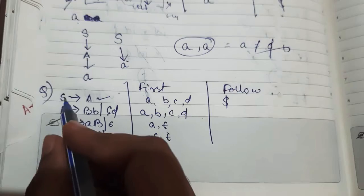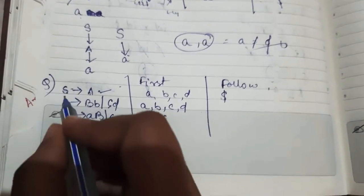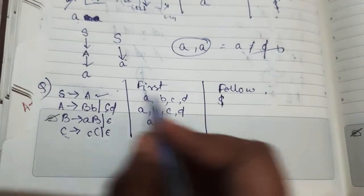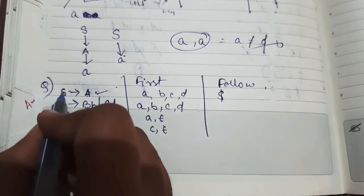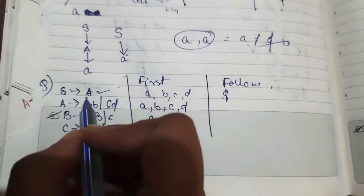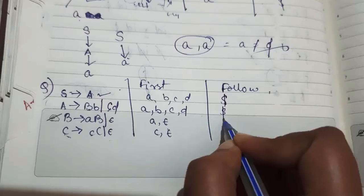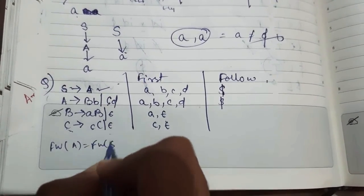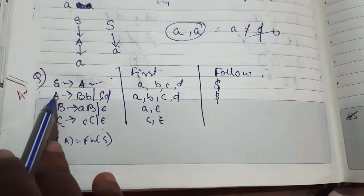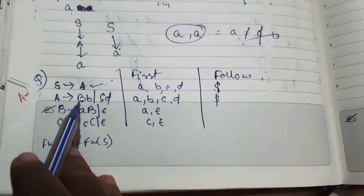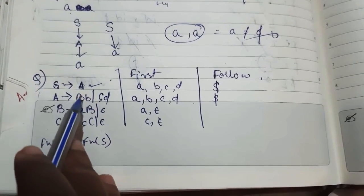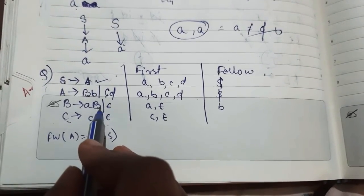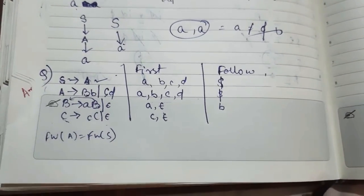For the first start non-terminal we have dollar, and then for A it depends on S, so here it is dollar. Follow of A equals follow of S. Then for B, B is followed by B and here B is at last, means follow of B equals follow of B, same thing, so nothing to consider.